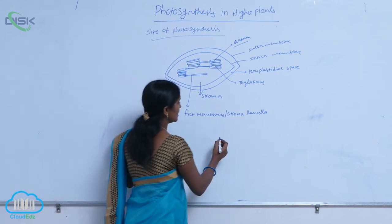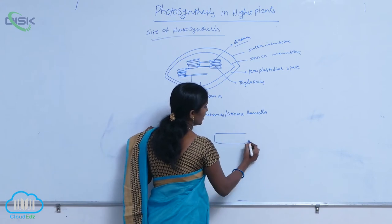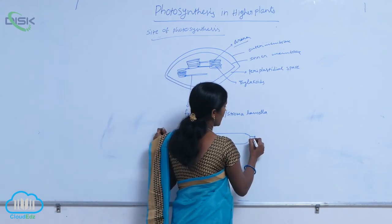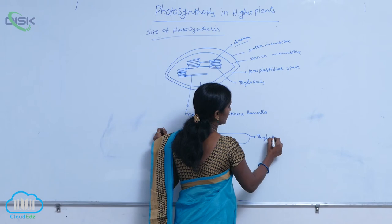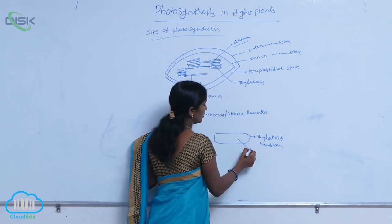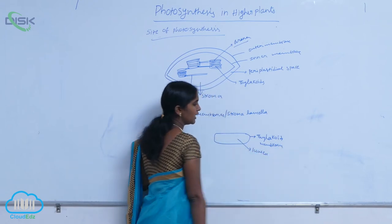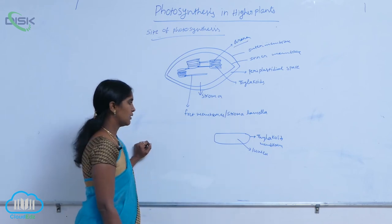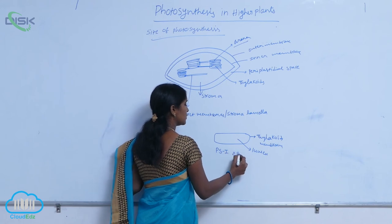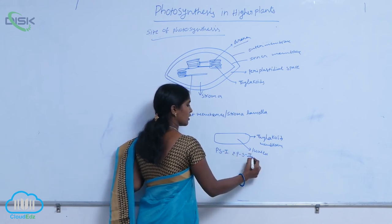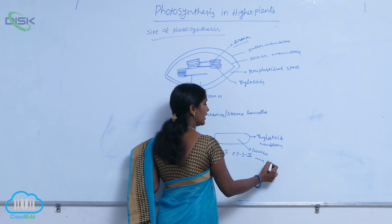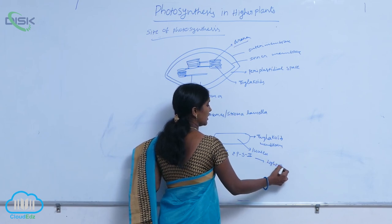Looking at the structure of the thylakoid, it consists of a thylakoid membrane, and inside there is a space called the lumen. At the thylakoid membrane, Photosystem 1 and Photosystem 2 action centers are present, and hence the light reactions are carried out there.